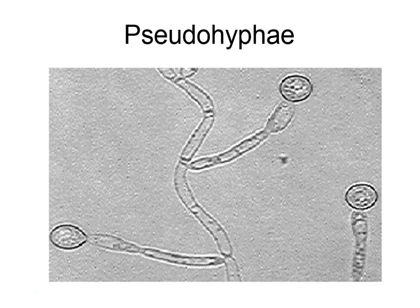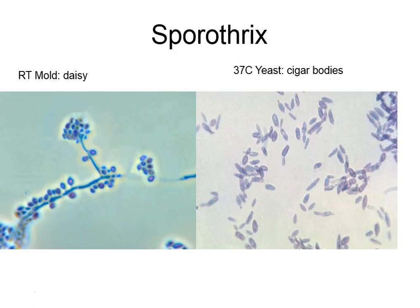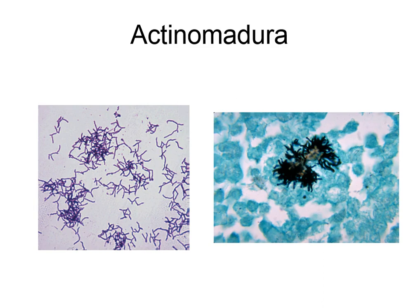Sporothrix has daisy-like conidia at room temperature (mold phase) and cigar bodies at 37°C — it starts the dimorphic fungi. It comes from thorns, hay, or wood, and causes dark lesions. The fungus-like bacteria: Actinomadura or Nocardia causes Madura foot. Actinomycosis causes lumpy jaw and can come from tooth extraction or dental surgery. Actinomadura is not acid-fast; Nocardia is.